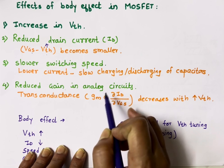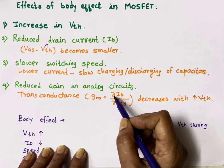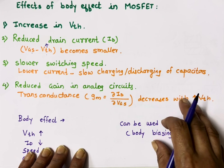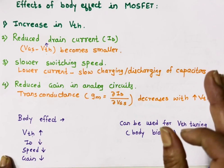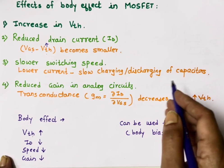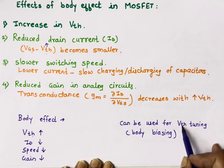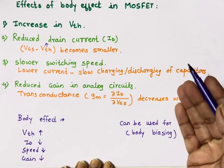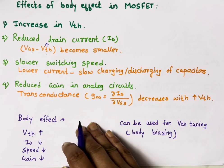Body effect also reduces gain in analog circuits. Transconductance GM is directly proportional to drain current, but since drain current decreases, transconductance also decreases. In short, because of body effect: threshold voltage increases, meaning more voltage is needed at the gate terminal to create a channel; current decreases; speed decreases; and gain decreases. However, sometimes engineers use this body effect for VTH tuning or body biasing.